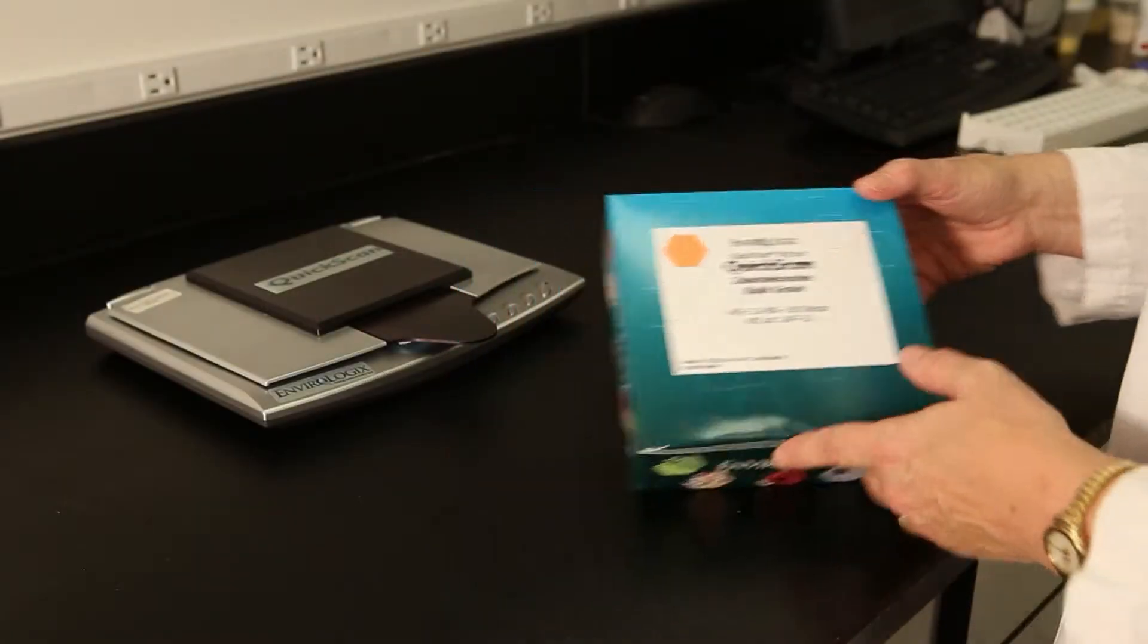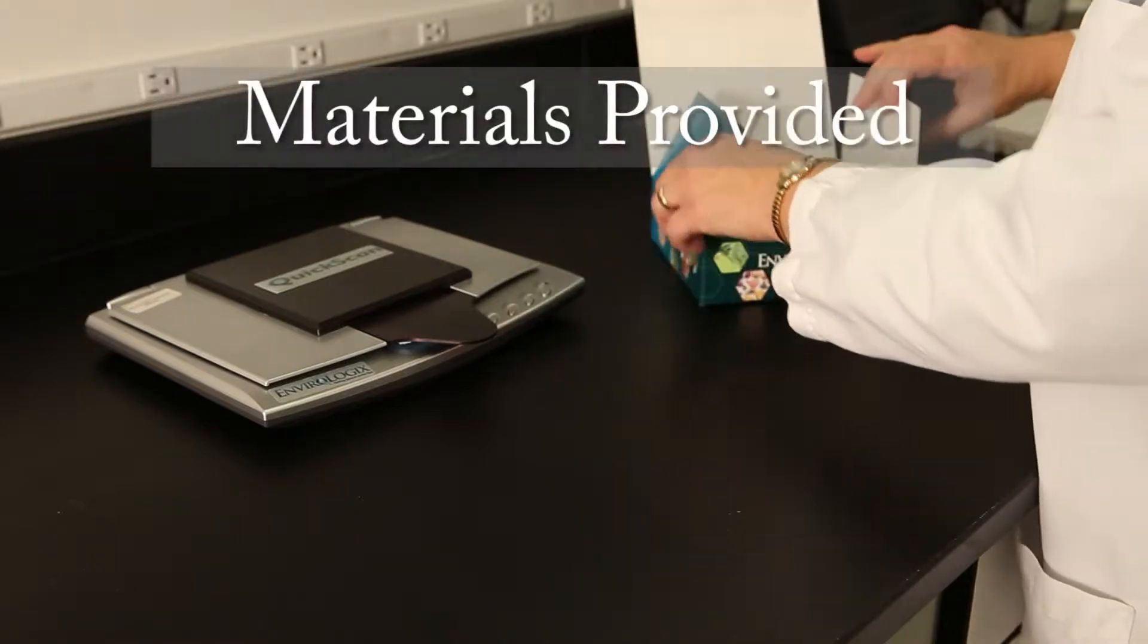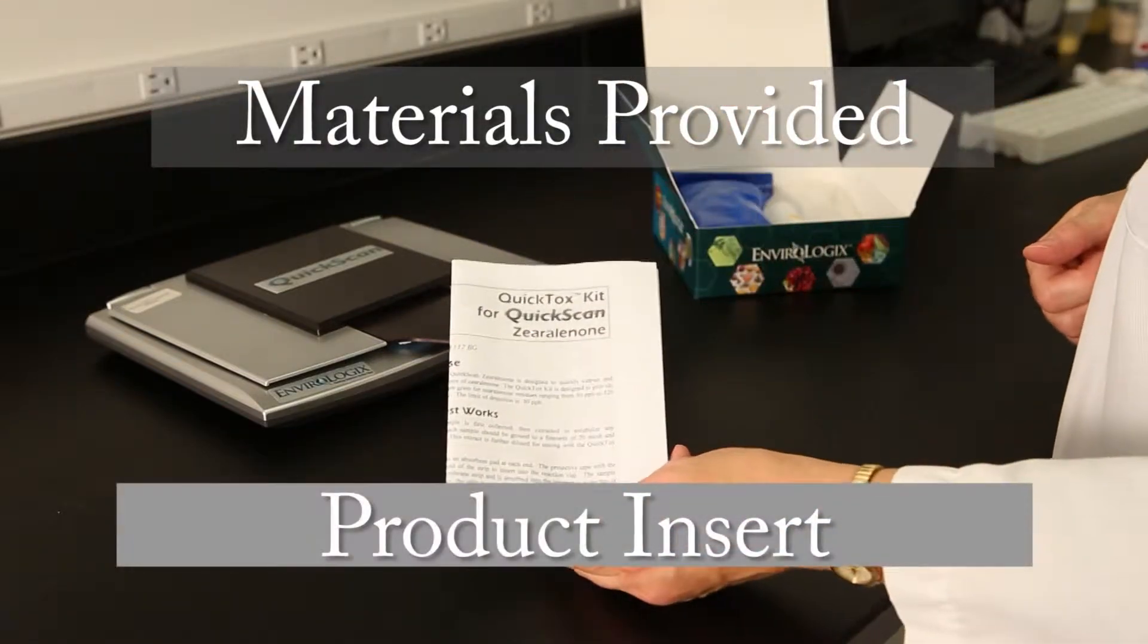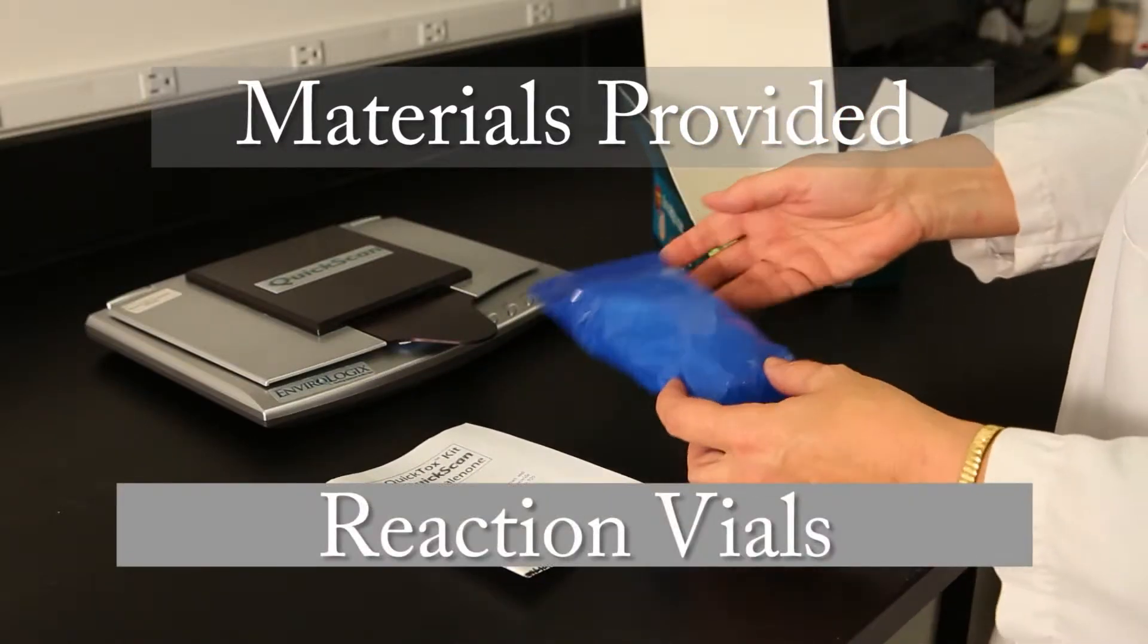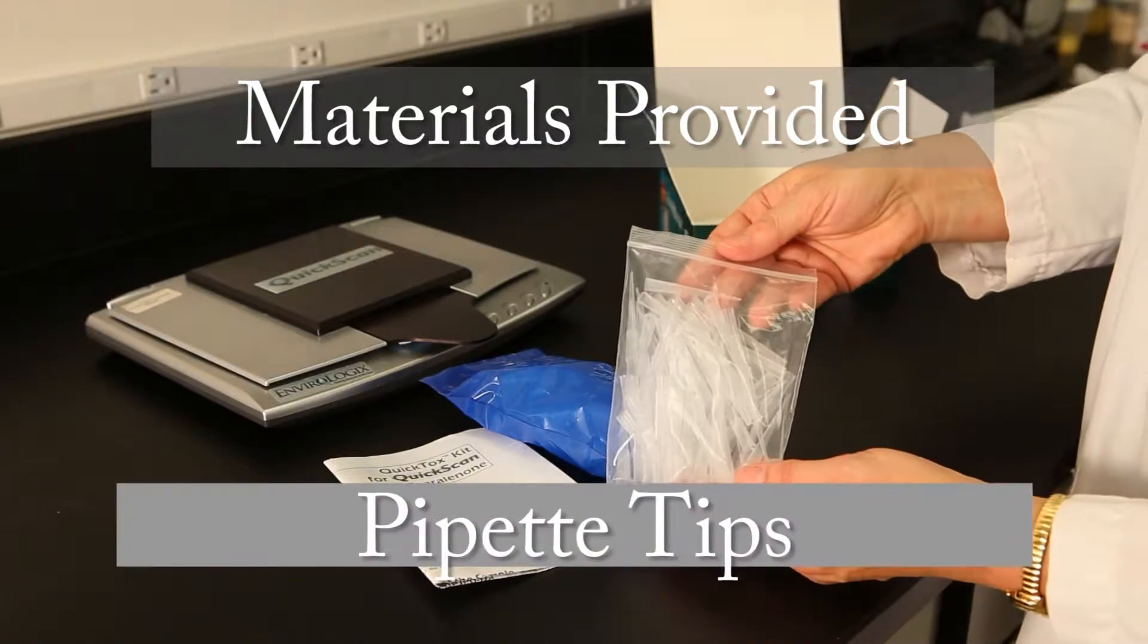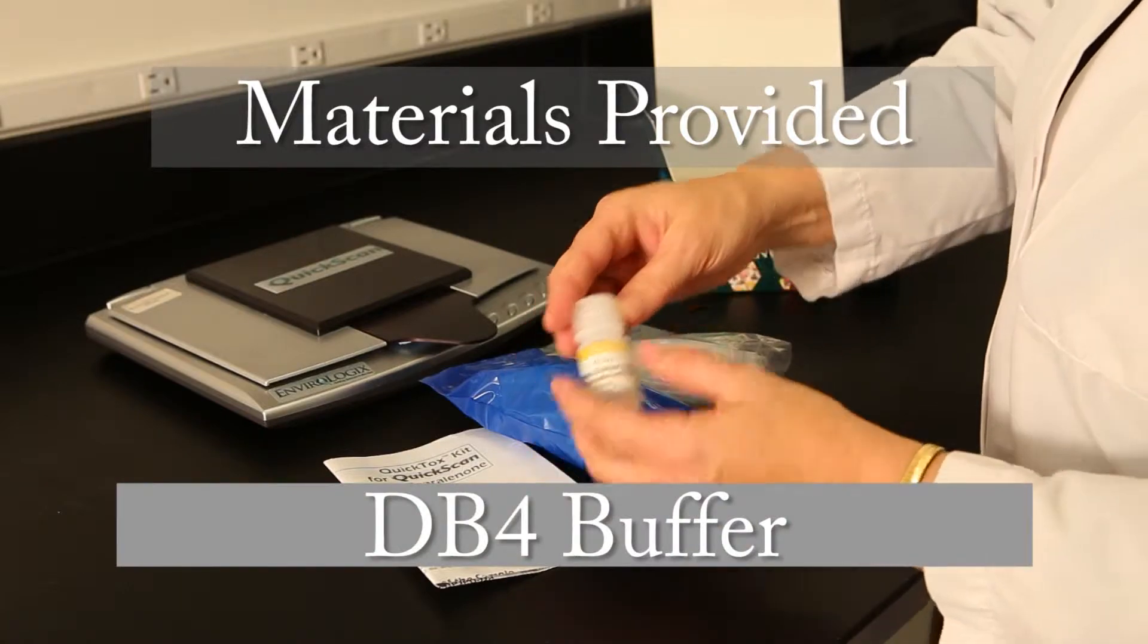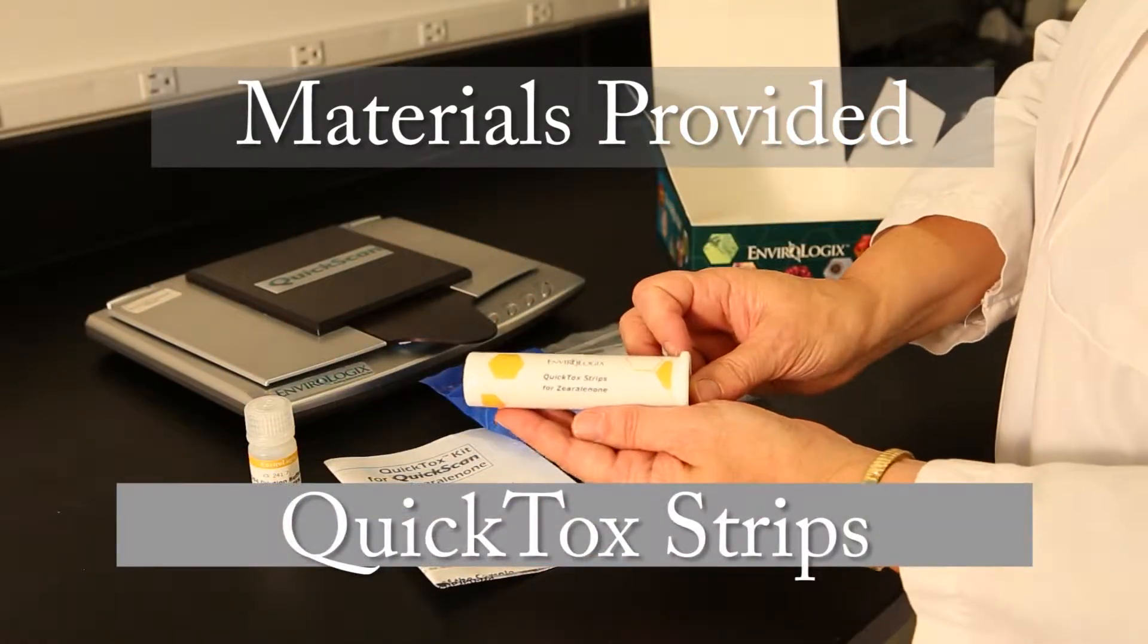When unpacking your QuickTox kit, please check to ensure all the components are present. Your kit should include a product insert, reaction vials, pipette tips, DB4 buffer, and QuickTox strips packed in a moisture-resistant canister.